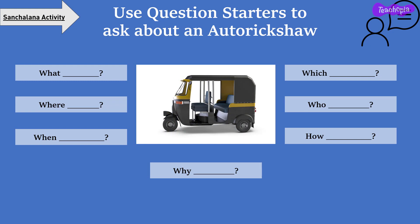Moving on to our first Sanchalana activity. Teachers, remember that here you need to use question starters to ask about an auto rickshaw. This activity requires you to give responses to your respective teacher mentors at the Sanchalana center. The question starters you can use are what, where, when, why, which, who and how. Please come up with questions about an auto rickshaw. You will be given about two minutes for this activity.